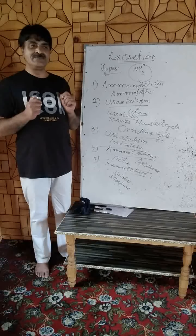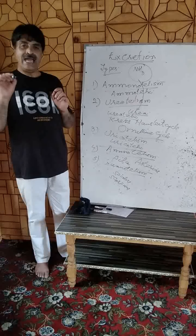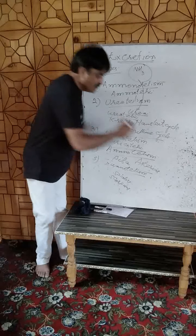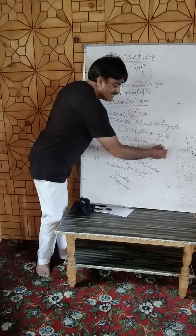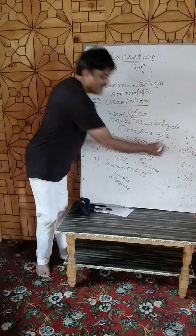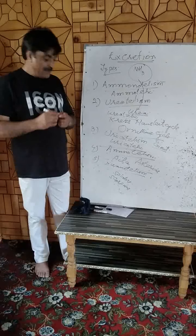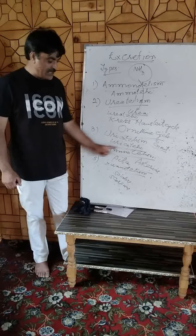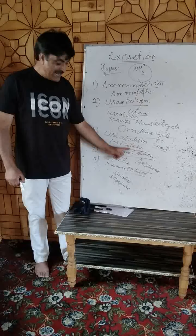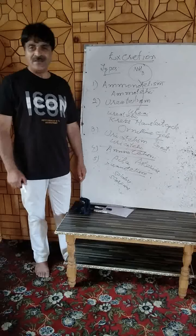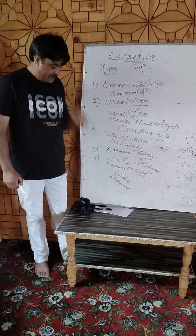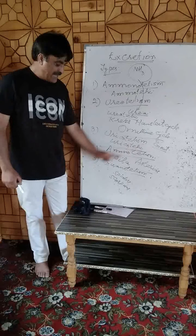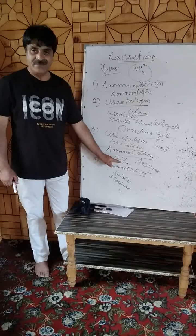Besides this, too much accumulation of uric acid inside the blood is called gout. There are also exceptional modes of excretion: aminotelism, where amino acids are excreted directly, and guanotelism, exhibited by animals like spiders and scorpions.